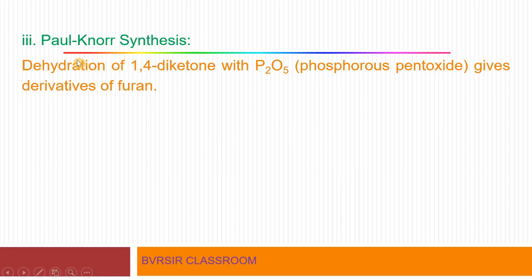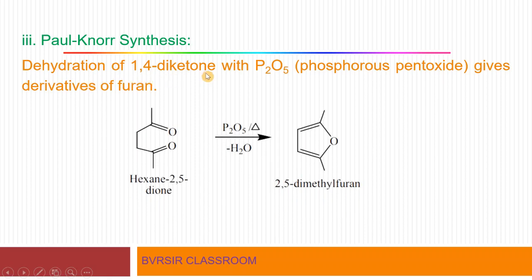The next method is Paal-Knorr synthesis, a very familiar reaction also seen with pyrrole. It involves the dehydration of a 1,4-diketone. The compound used is hexane-2,5-dione, which has six carbons with ketone groups at the second and fifth positions. When this is reacted with phosphorus pentoxide and heated, a substituted furan is obtained — specifically 2,5-dimethylfuran. This entire set of reactions is called Paal-Knorr synthesis, an important reaction for your examination.